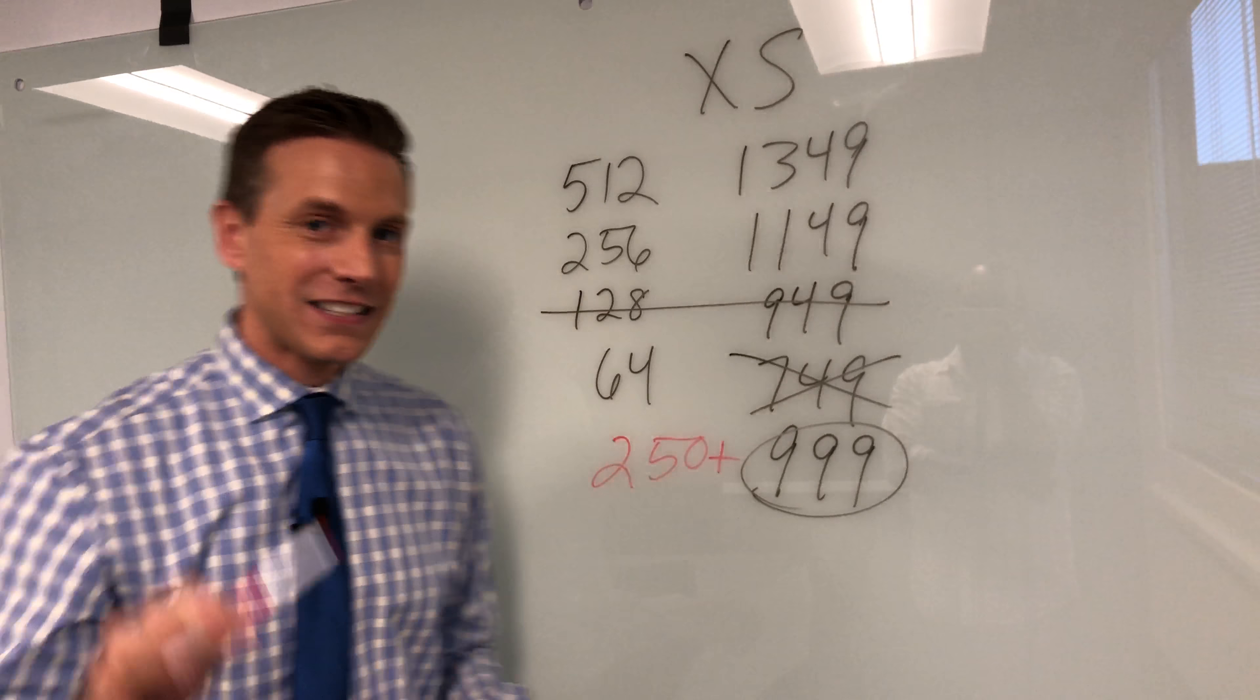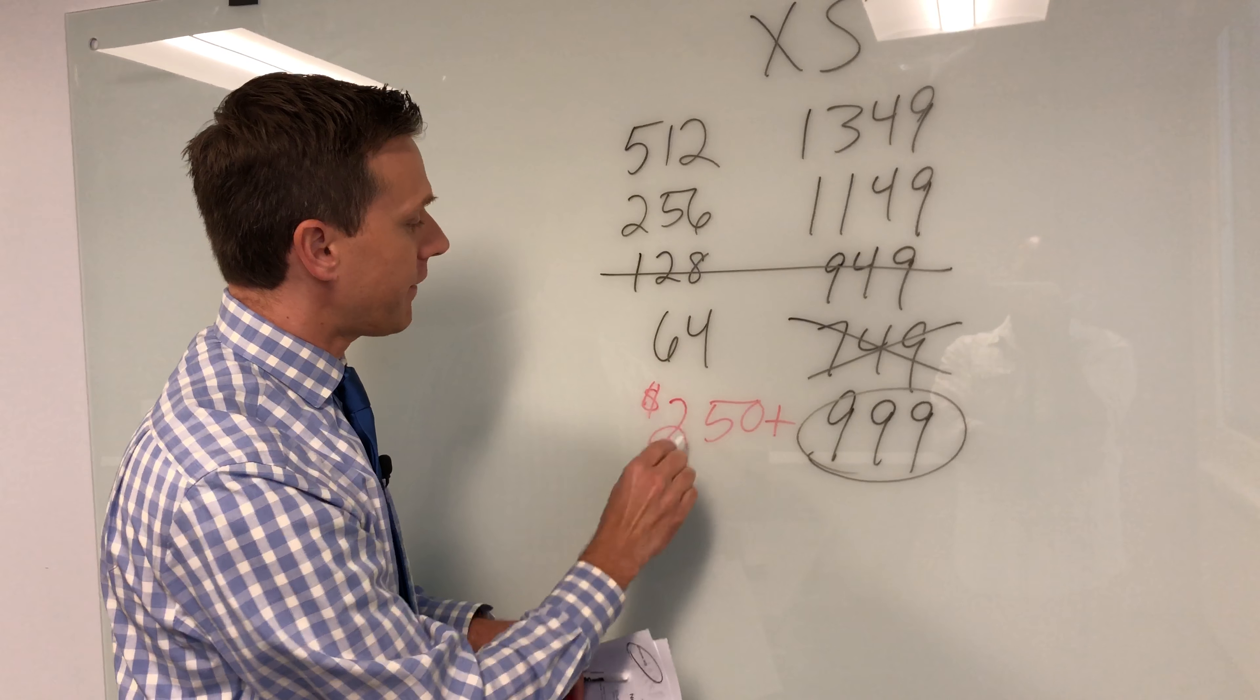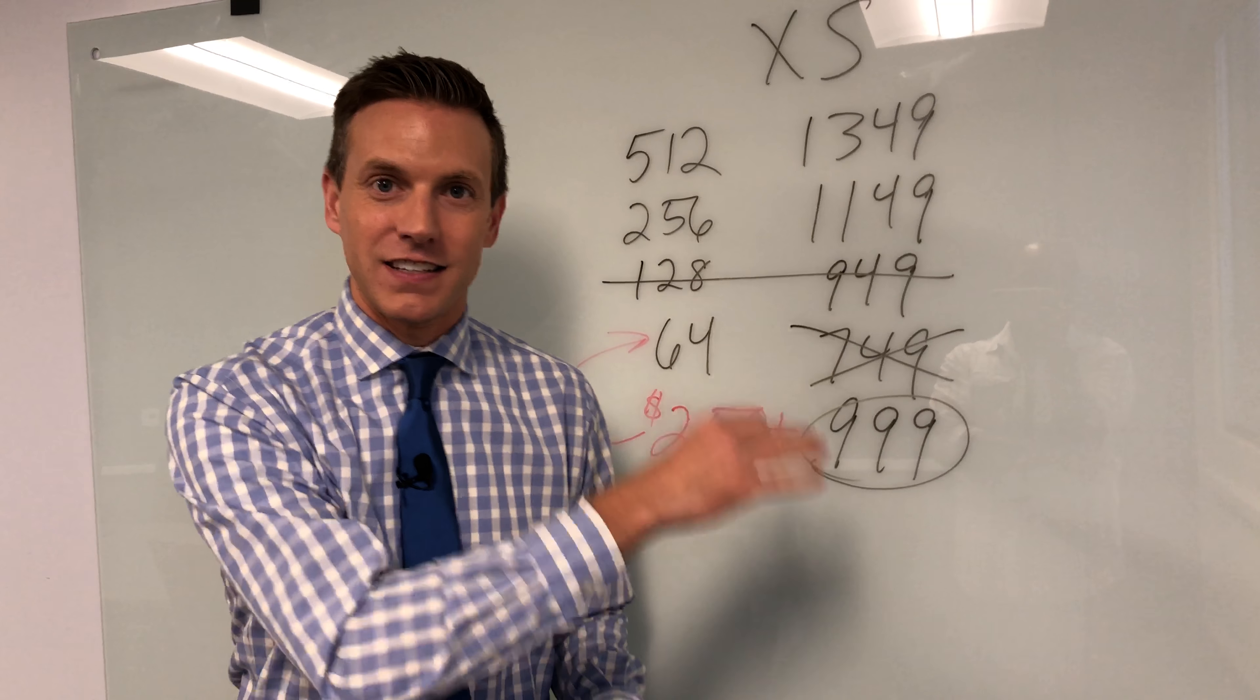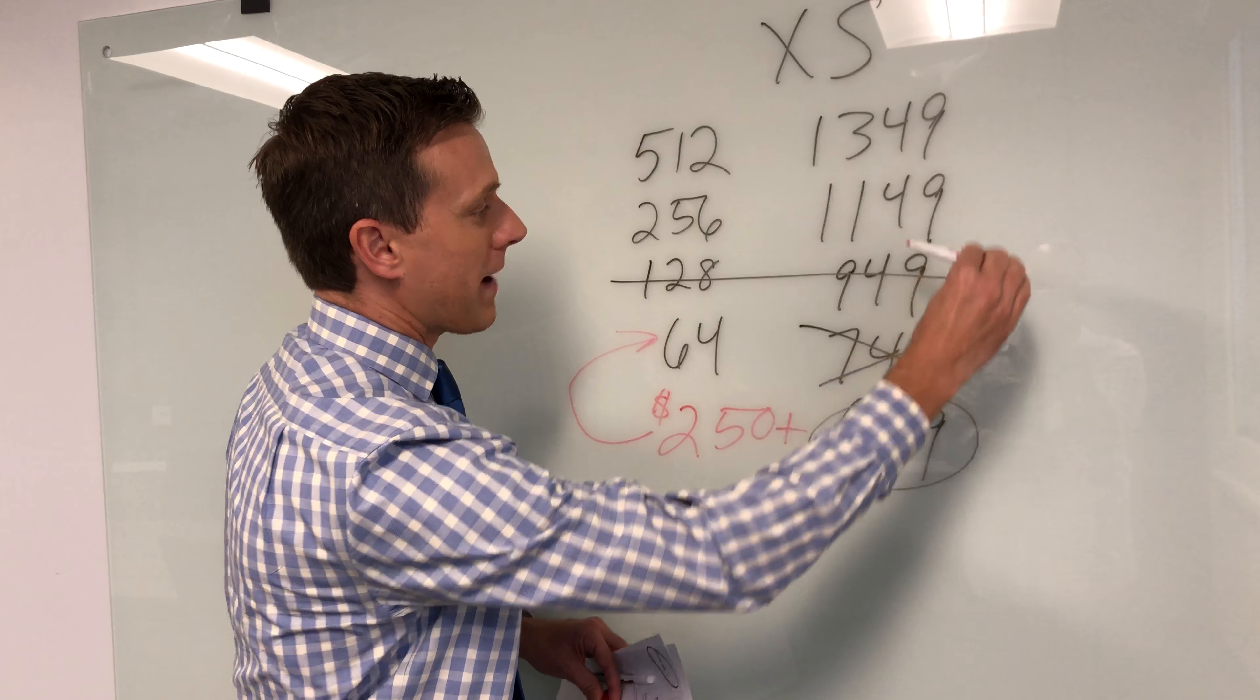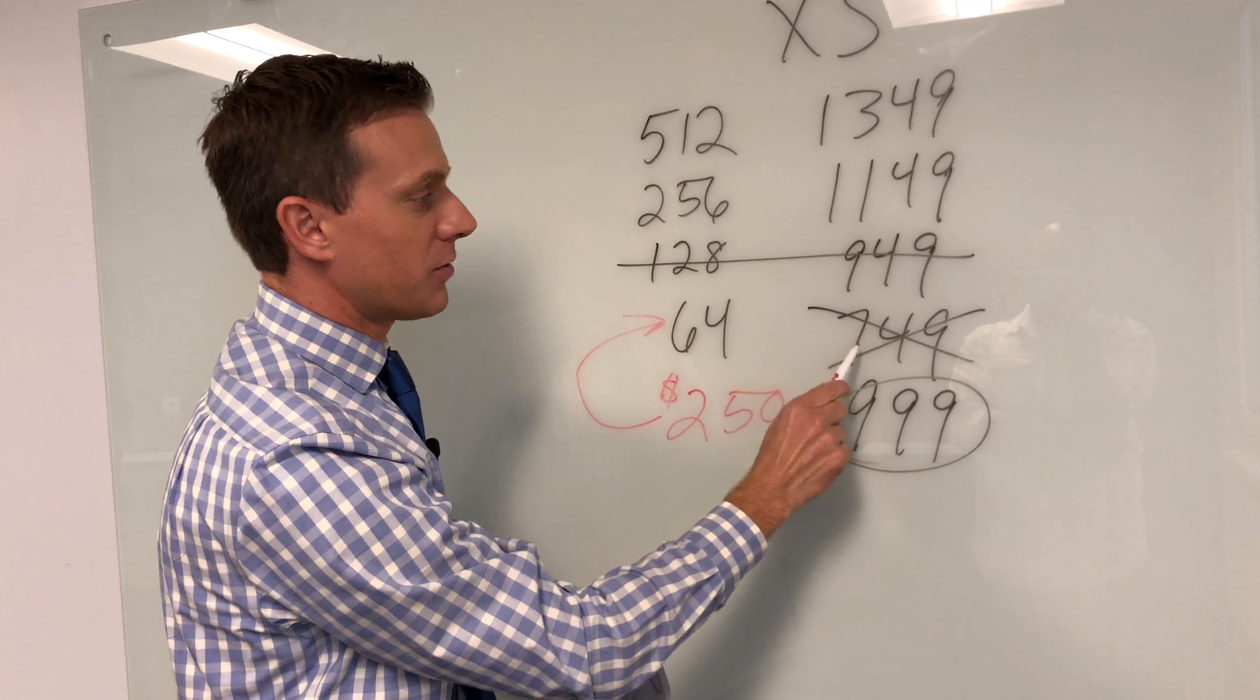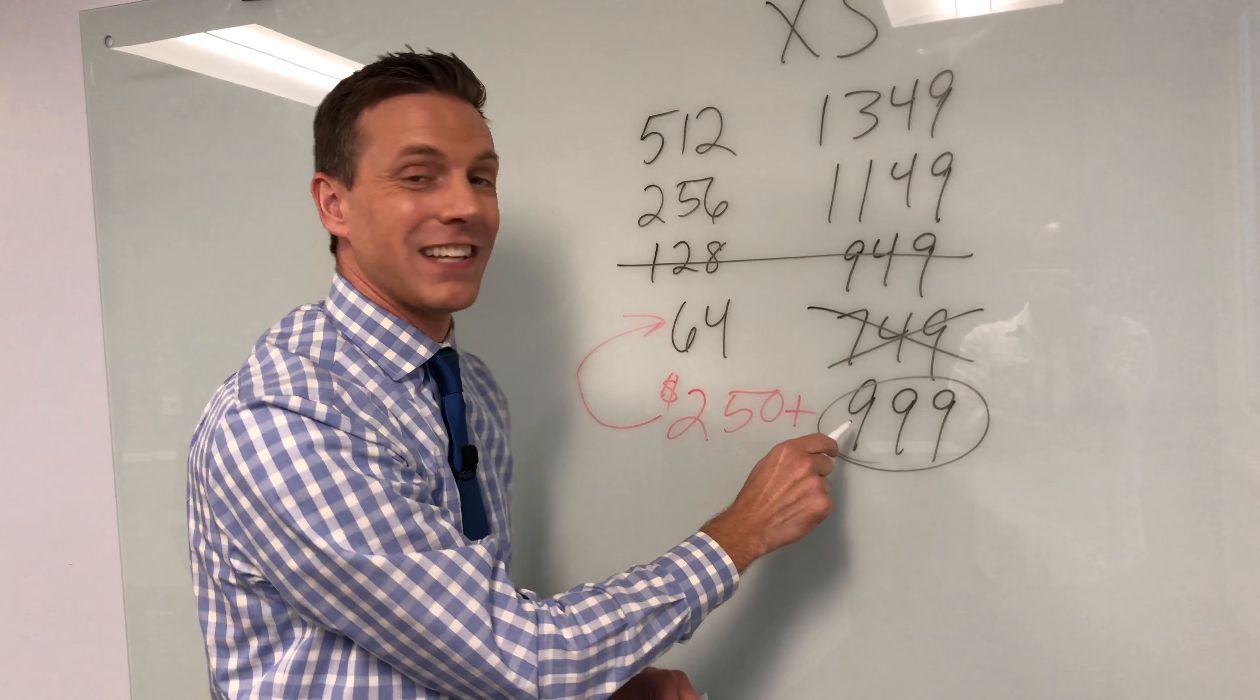So the way I see it, you are actually paying a $250 premium to get the cheapest device. You see how that works, because if you're following the pattern of $200 off and half the memory, this should be $749. They're actually selling it for $999.